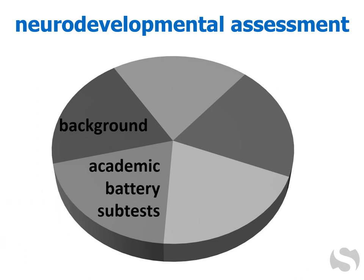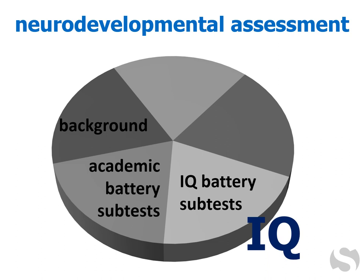IQ, or intelligence tests, are batteries of numerous subtests, each of which assesses certain mental abilities like applied reasoning and long-term memory. An intelligence test yields an IQ score, which is an index of overall mental ability. But subtest scores are more useful for neurodevelopmental assessments, since the goal is to reveal profiles of abilities.